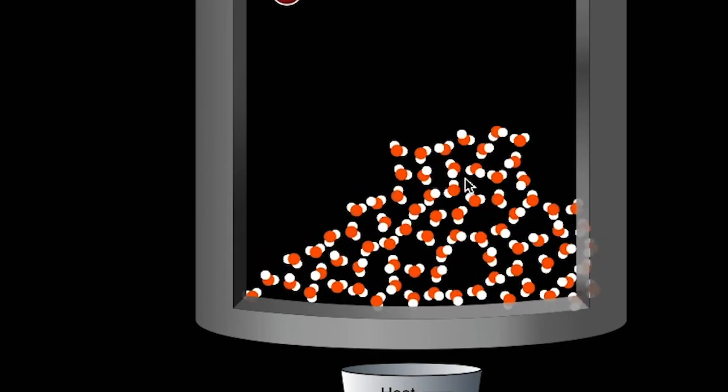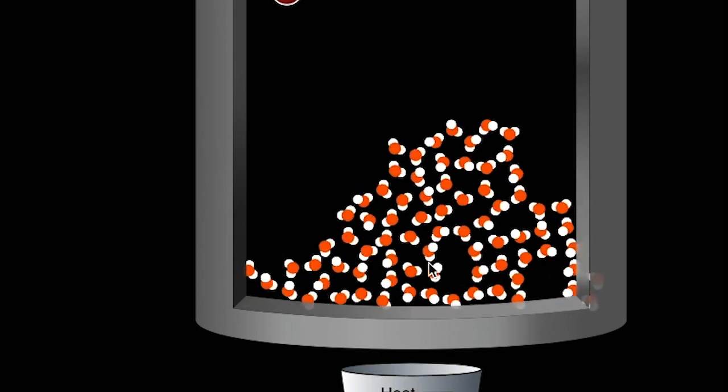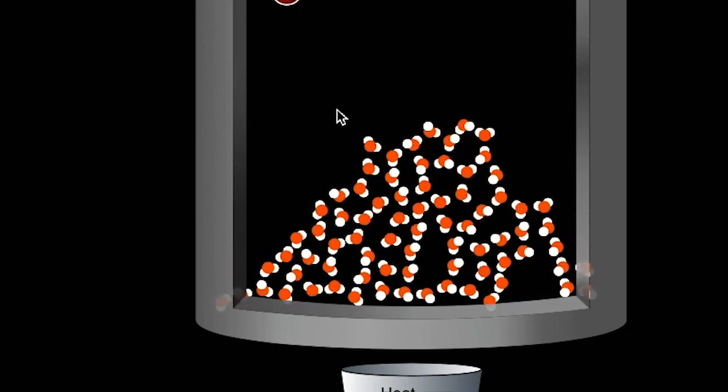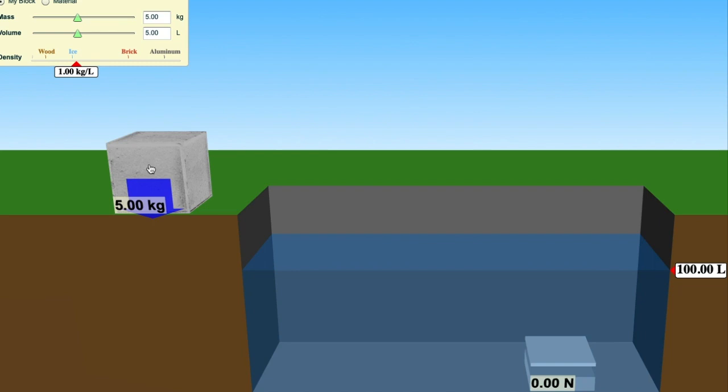So in other words, now the volume is greater now that it's cooler. So it takes up more space. And so the density overall is less.